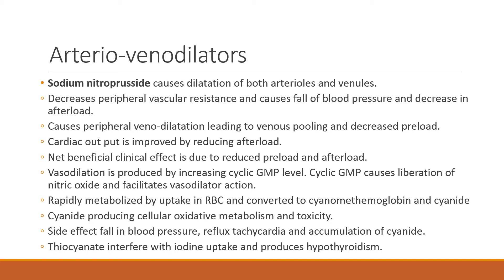Peripheral venodilation leads to venous pooling and a decrease in preload. Preload refers to the filling of blood coming toward the heart. Venodilation accommodates more fluid in the veins, pulling blood toward the venous side, reducing the preload on the heart. Cardiac output is also improved, and afterload — the load remaining after ejection — is also reduced. Net effects include reduced preload and afterload.